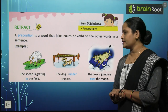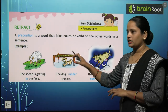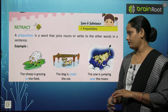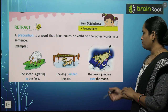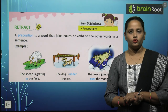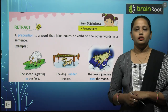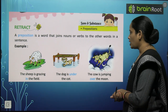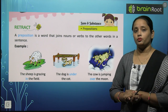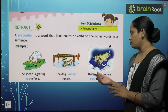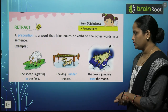The dog is under the cot — dog cot ke neeche hai. Next, the cow is jumping over the moon — cow moon ke upar jump kar rahi hai. Is it possible? Kya cow moon ke upar jump kar sakti hai? No. But the sentence says the cow is jumping over the moon.